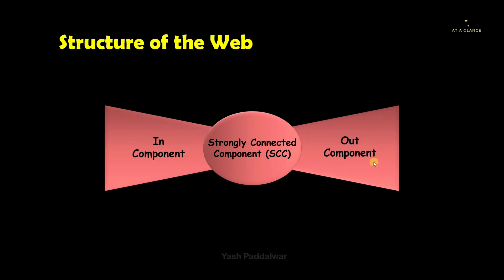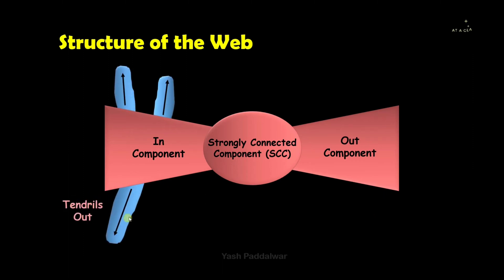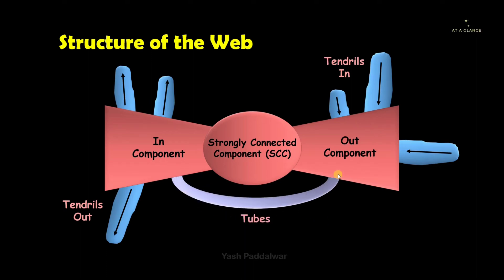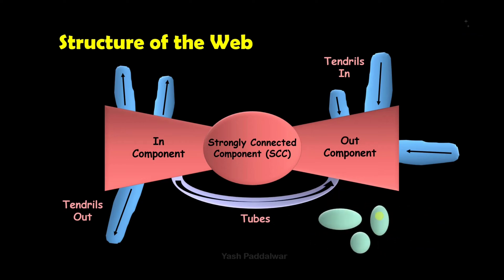The next components are the in component and out component. For these, there are tendrils associated. When it comes to the in component, the tendrils move out — that is why it is called tendrils out. When it comes to the out component, the tendrils move in — tendrils in. Apart from these tendrils, there is a tube-like structure which comes from the in component and moves to the out component. There are also disconnected components, which are isolated from the entire structure of the web.